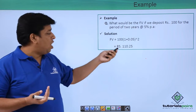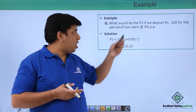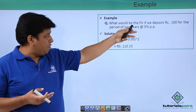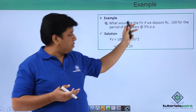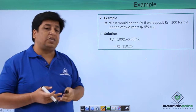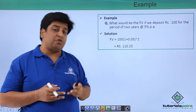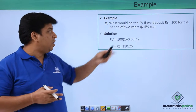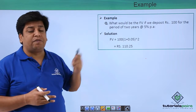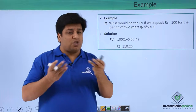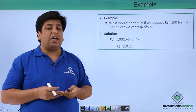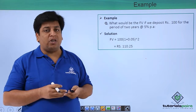This comes to rupees 110.25. So the present value of rupees 100 today grows to a future value of rupees 110.25 at a five percent rate of interest over two years. This was time value of money in a nutshell.